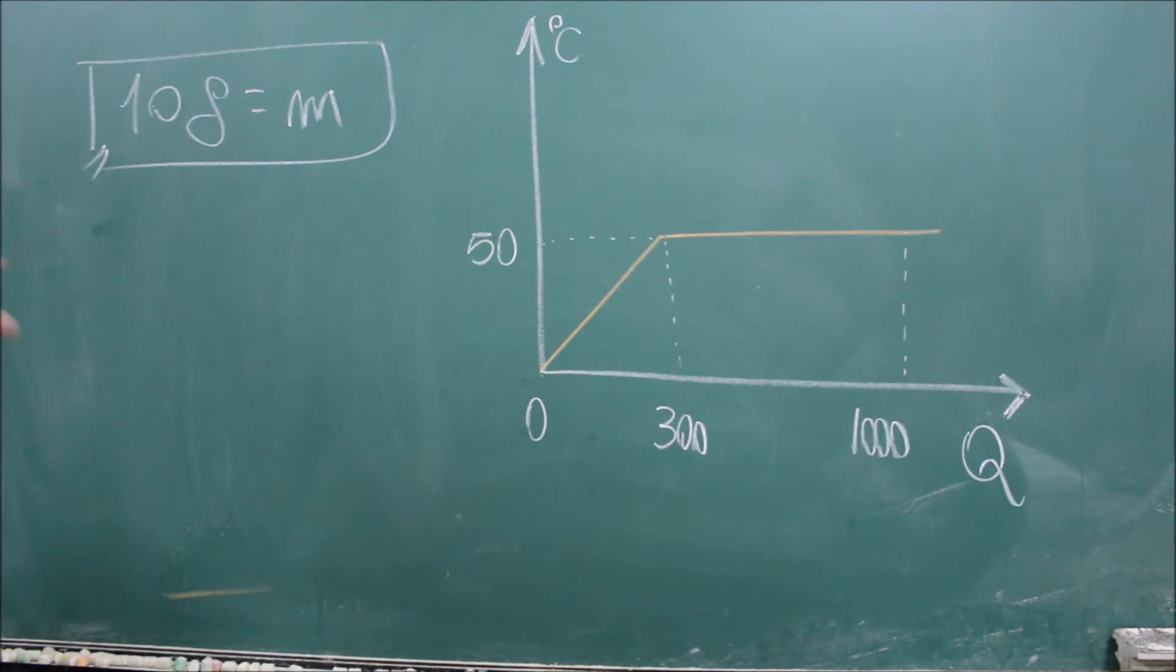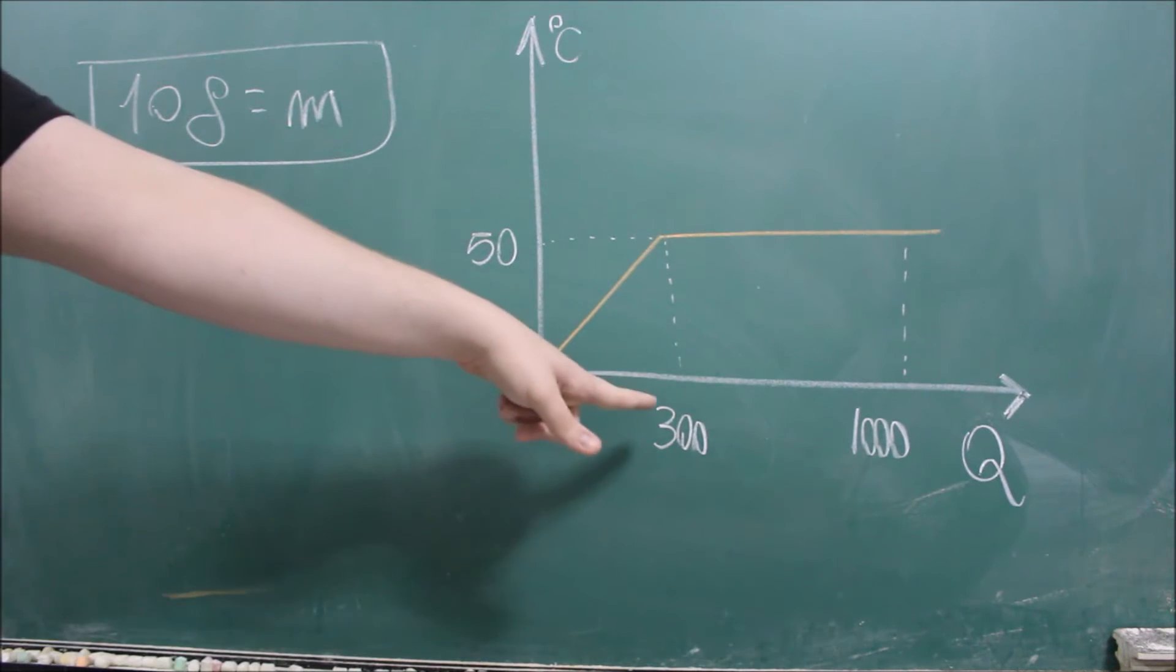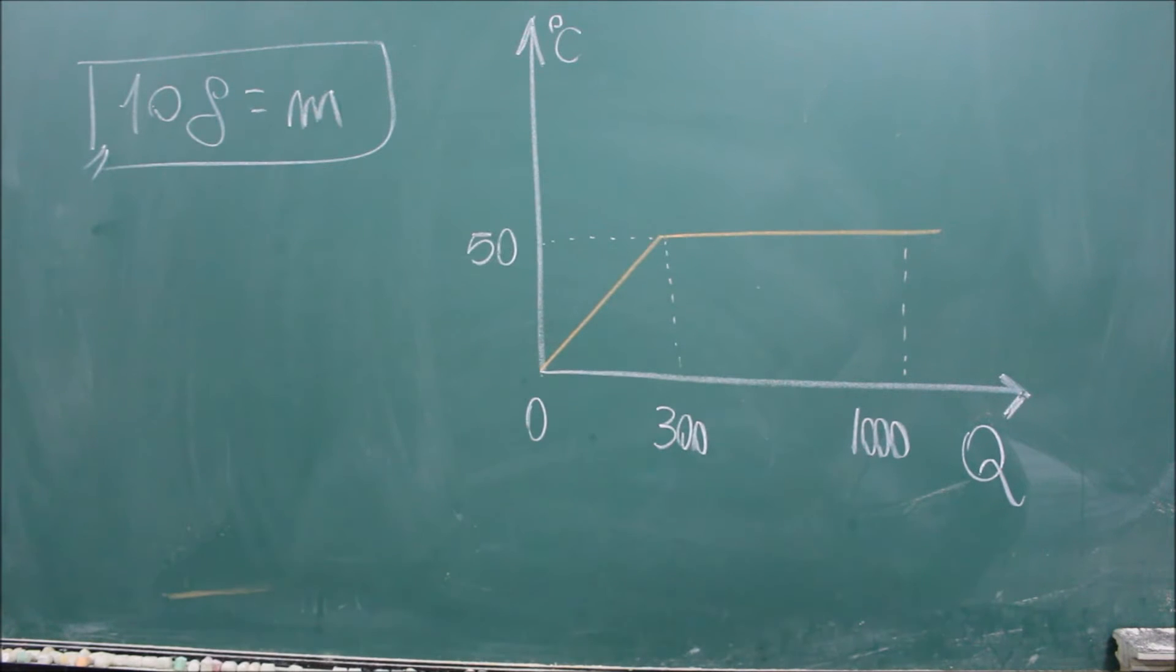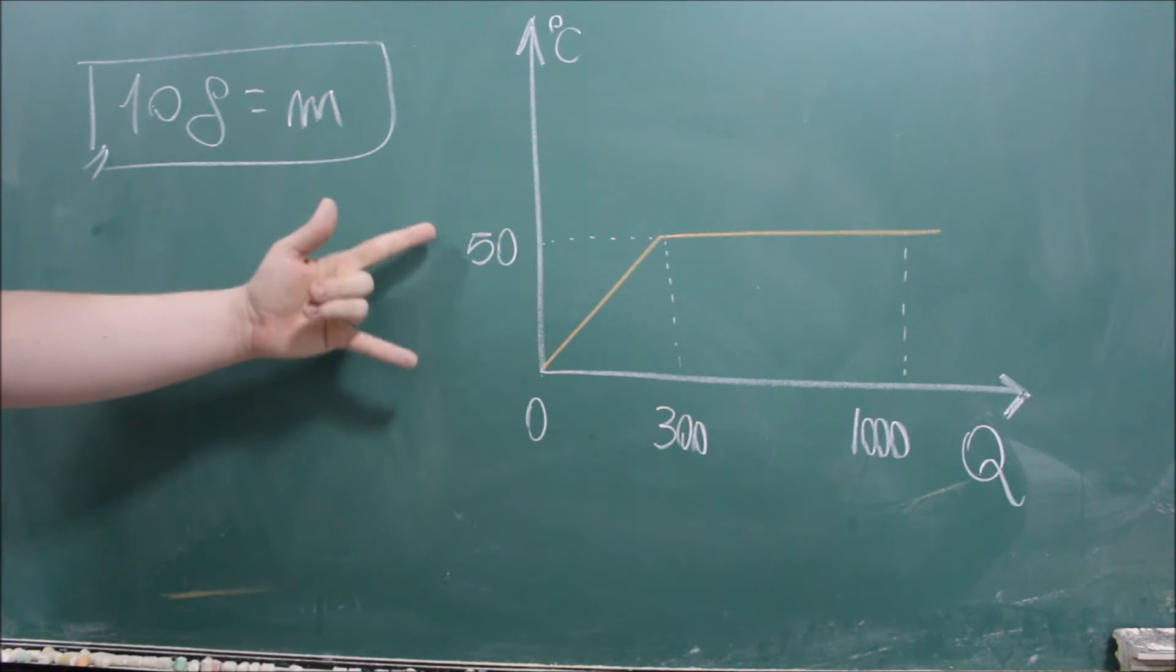Como ele está falando de mudança de fase, mudança de estado, a partir daqui do zero até o mil, a gente tem que interpretar esse gráfico. A gente sabe que no período zero, 300, não há mudança de fase, há mudança de temperatura.